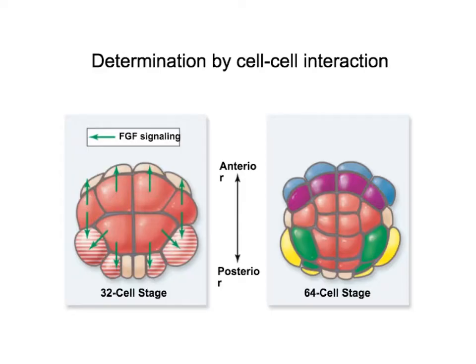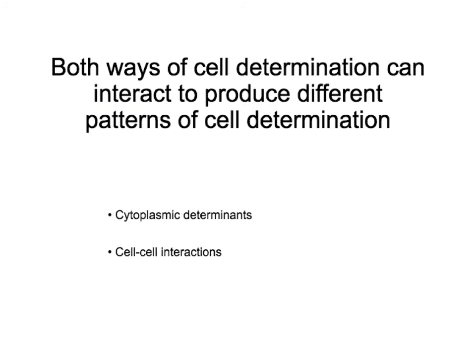Another way in which cells become determined is by interaction with neighboring cells. Cells in the anterior part are producing FGF signaling and telling the cells around them what they are supposed to become. These cells are signaling the neighboring cells that they should become something different from what they've already committed to be.